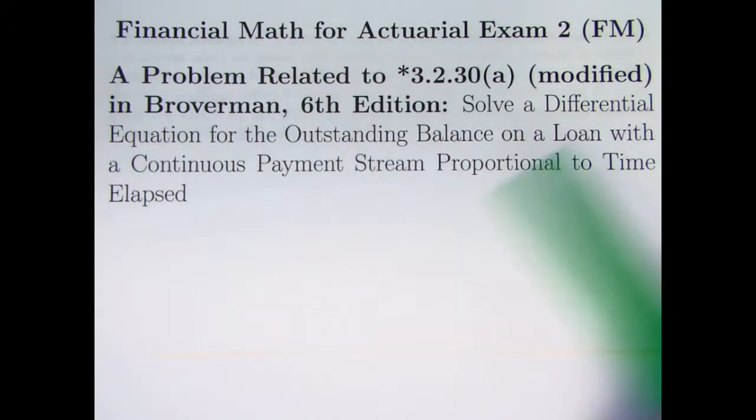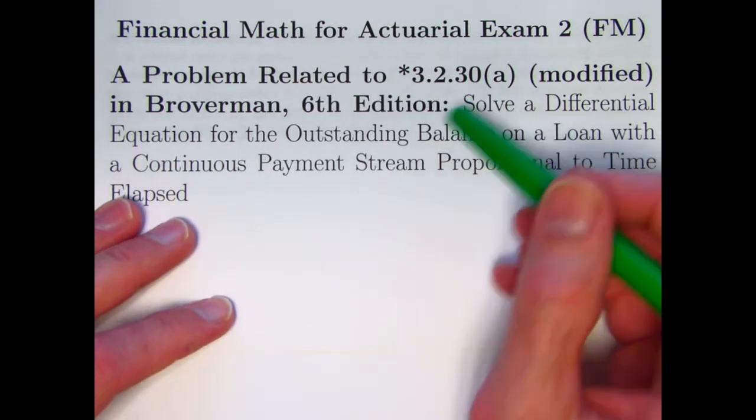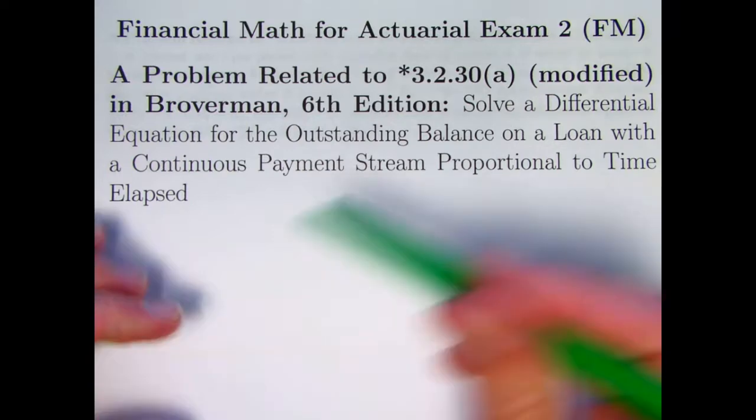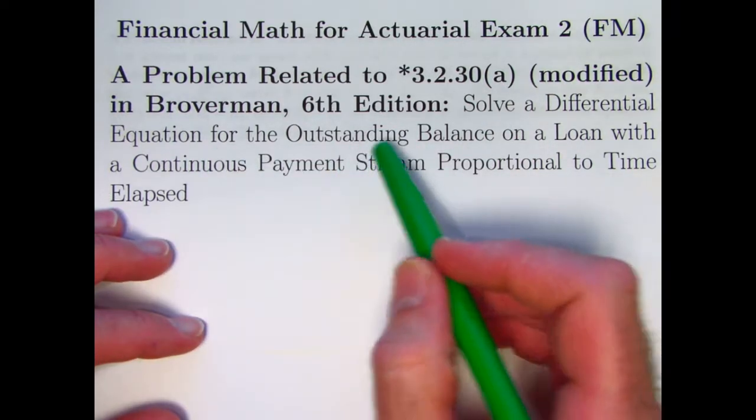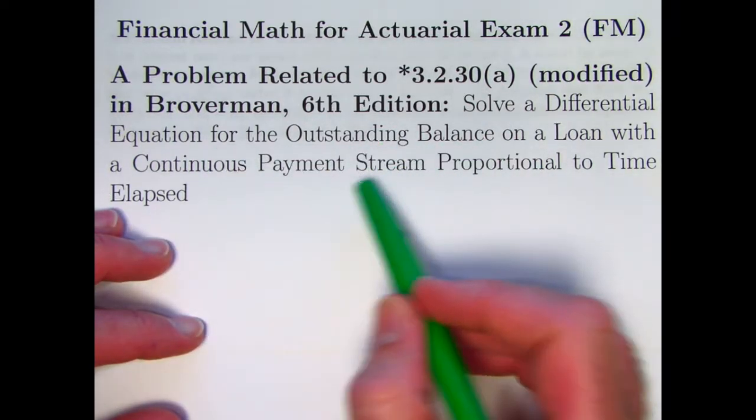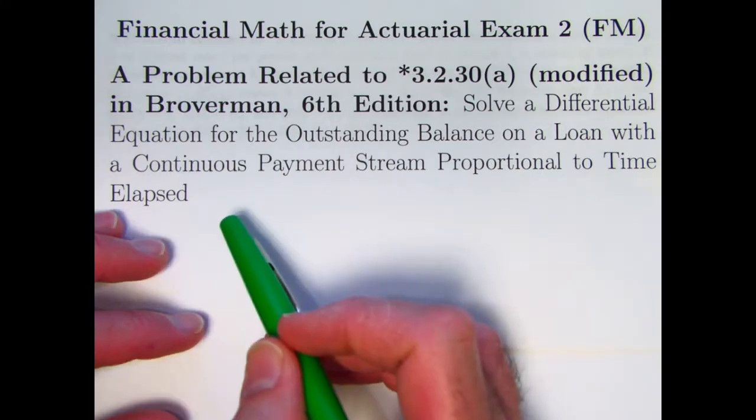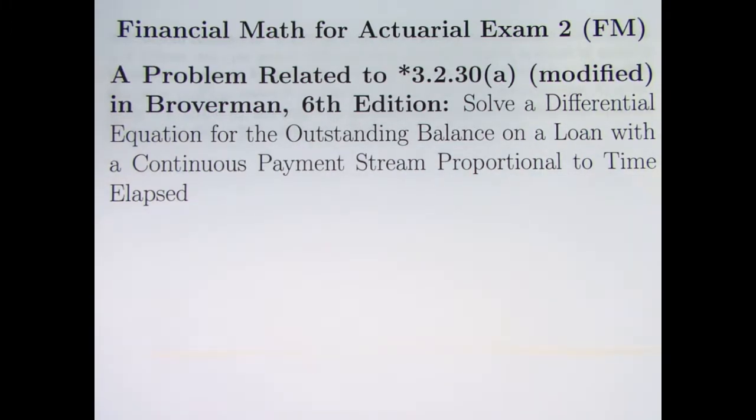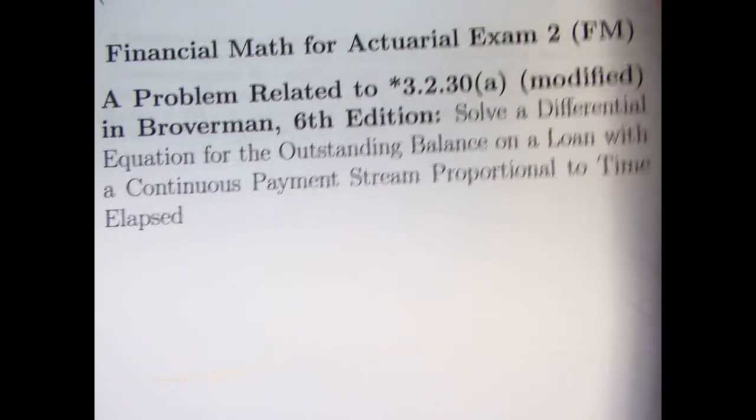In this video, I want to do a related problem that I just made up to that problem, 3.2.30a from Broverman's book, where we'll be solving the same differential equation for the outstanding balance, but this time the payment stream is proportional to the time elapsed. I made a mistake at the end of that last video that I would just point out at the beginning of this video before we get into our problem.